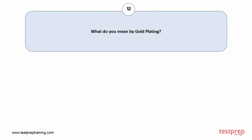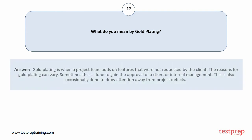Question number 12: What do you mean by gold plating? Your answer is: Gold plating is when a project team adds on features that were not requested by the client. The reasons for gold plating can vary. Sometimes this is done to gain the approval of a client or internal management. This is also occasionally done to draw attention away from project defects.